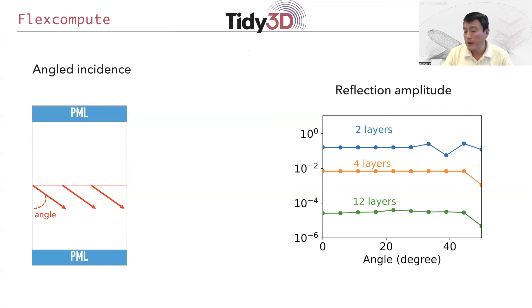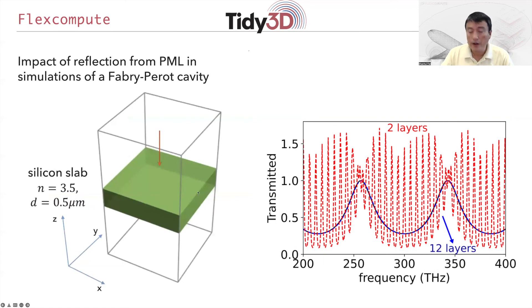Now finally, I would like to directly illustrate how these kinds of different reflectivity are going to influence the quality of your simulation. In particular, we'll be comparing a simulation where we use only two layers of PML compared with the case where we use 12 layers of PML. The calculation is a fairly simple structure, a Fabry-Perot cavity or a thin layer of silicon. We look at the transmission coefficient for light normally incident upon the structure. Plotted here is the transmission as a function of frequency. The blue curve here is the result that you obtain from 12 layers of PML, and this is actually almost identical to an analytic result.